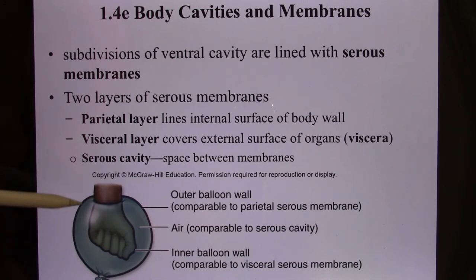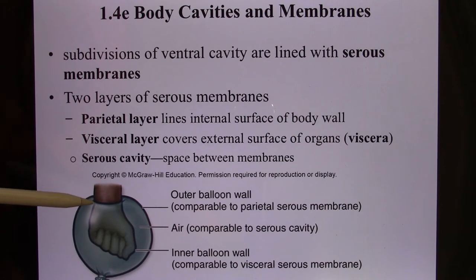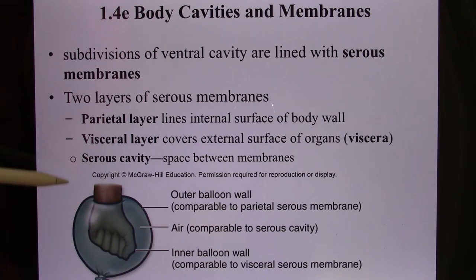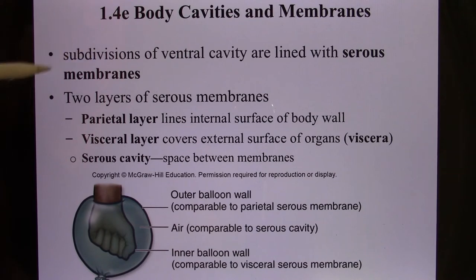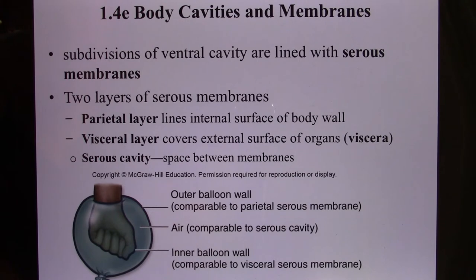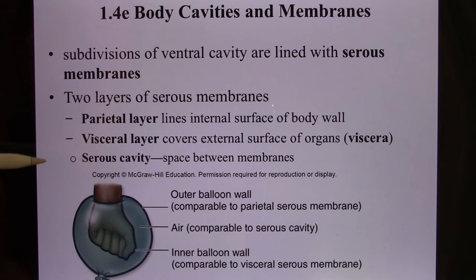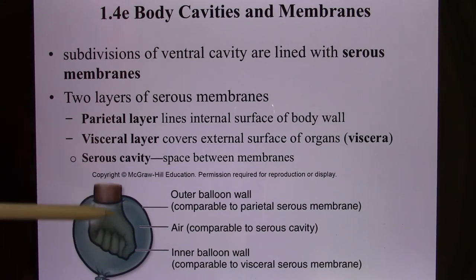You have one layer touching the lung and the other layer touching the outside. The one touching the lung is called the visceral layer, and the one touching the outside is called the parietal layer. It's created by the serous membrane — a membrane with liquid. The liquid is like a drop of water between two glasses: it's very difficult to separate them. So the serous membrane serves that function — the water glues the lung to the visceral layer.